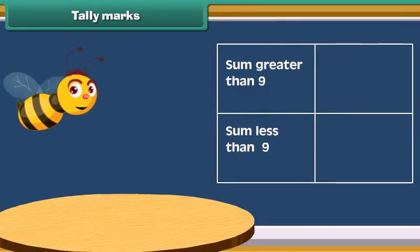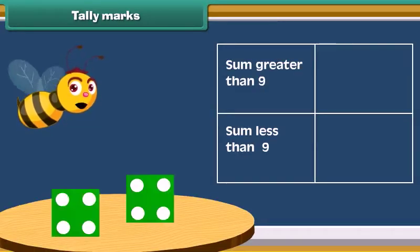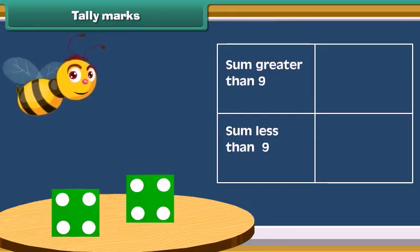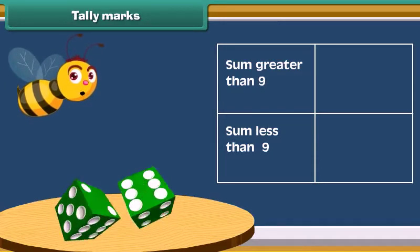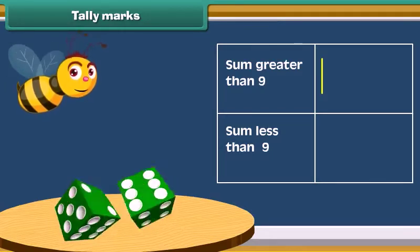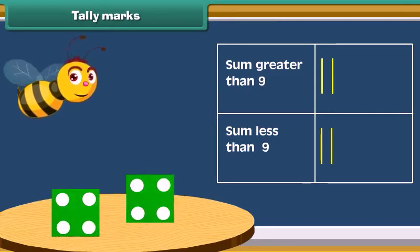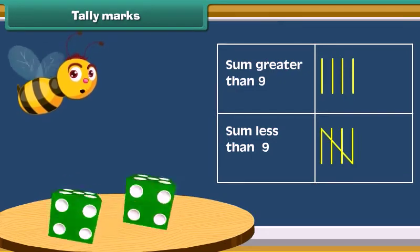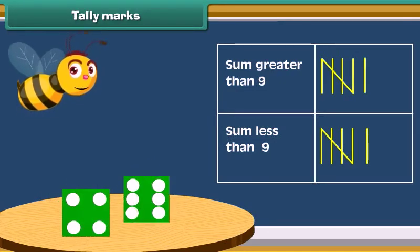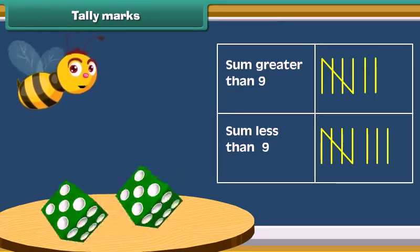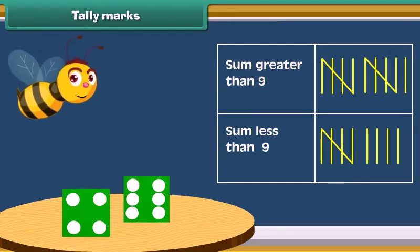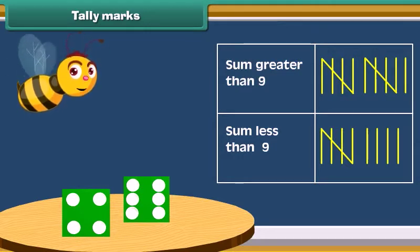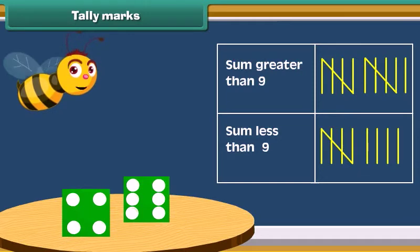Now let's do an activity. Take two dice. Throw both the dice together and note how many times the sum of numbers on both dice is greater than 9. Also note number of times sum is less than 9. Do this activity for 20 times and mark in the table each time. So we see that marking help us to record data. These are called tally marks.